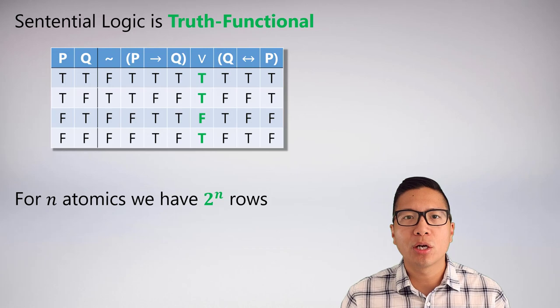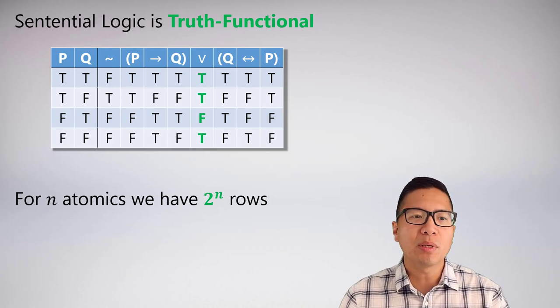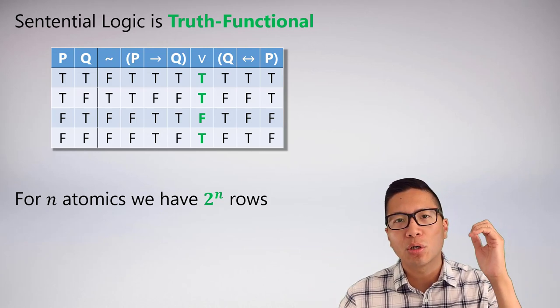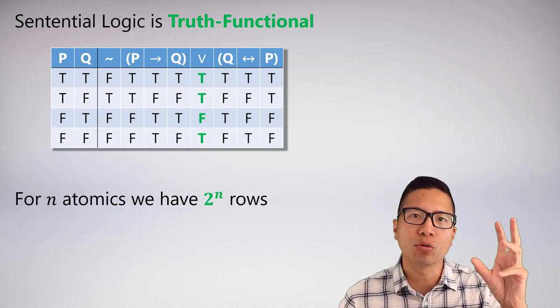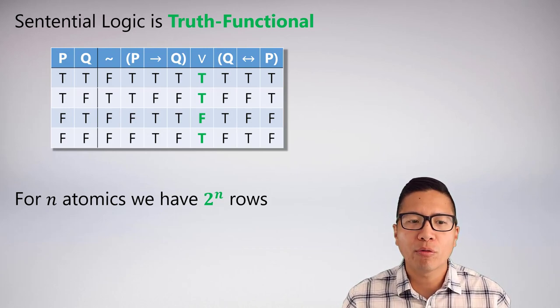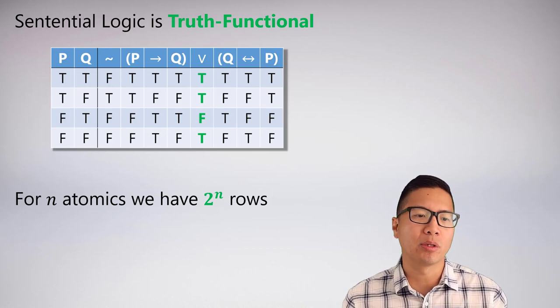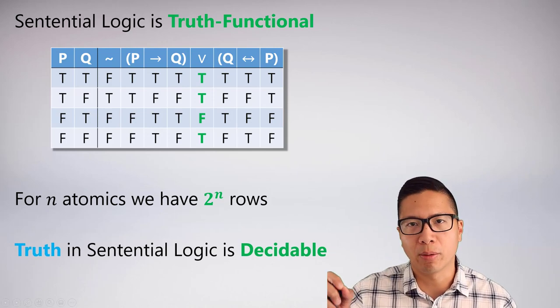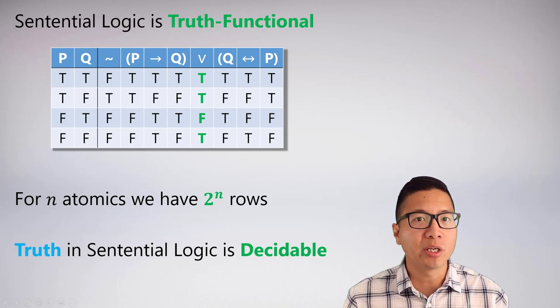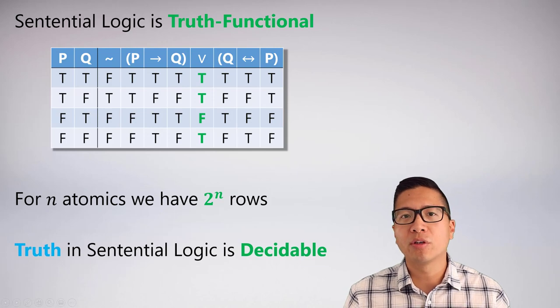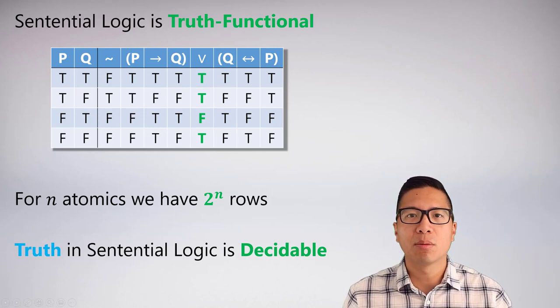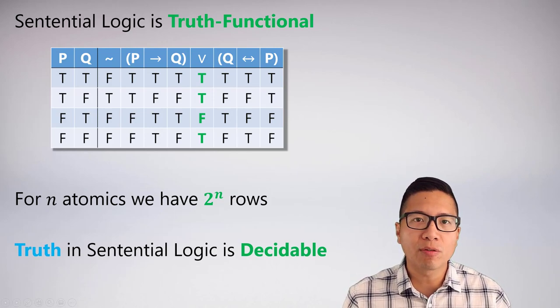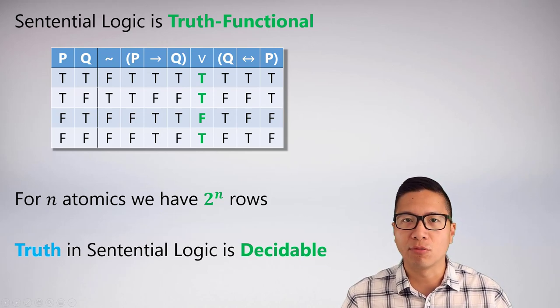So, if you recall, sentential logic has this feature of truth functional, which means that for any statement I give you, I can fully analyze the truth in terms of the truth value of their atomic parts. We know there's an annoying limitation—for n atomics we have 2^n rows. But logic in the sentential realm is perfectly decidable, which means something like a computer can just crunch it, no problem, and it will always give me a nice answer.